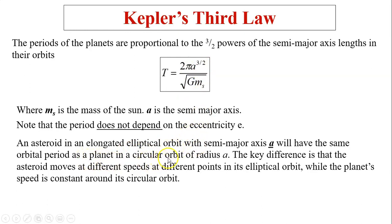Asteroids in an elongated elliptical orbit with semi-major axis A will have the same orbital period as a planet in a circular orbit of radius A. The key difference is that the asteroid moves at different speeds at different points in its elliptical orbit. When it's further from the sun it's slower, when it's closer it's faster, whereas the planet speed is constant around its circular orbit. But both take the same amount of time to go around.